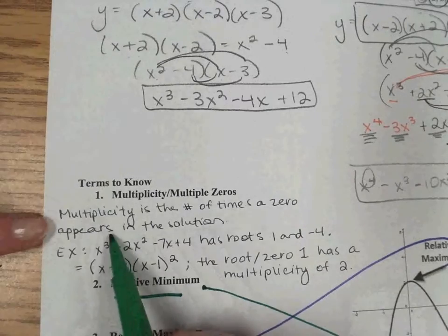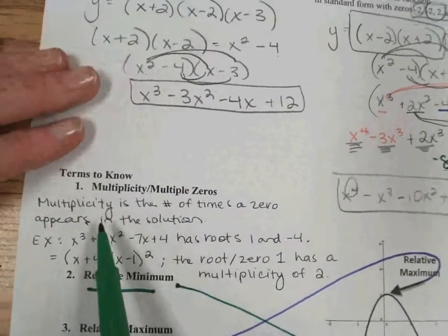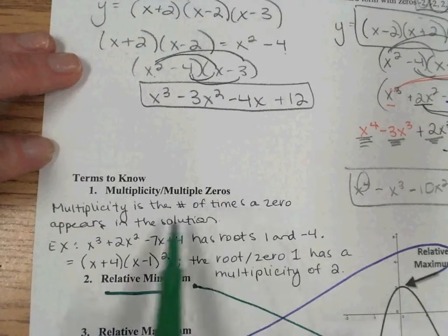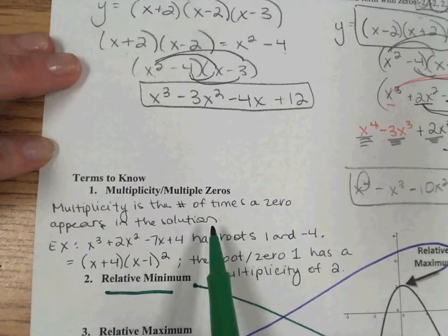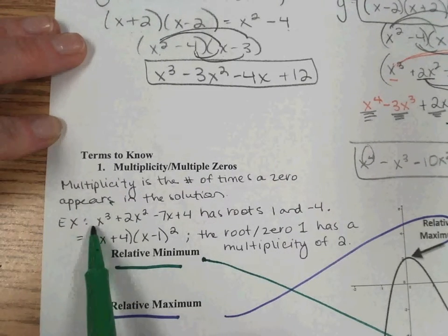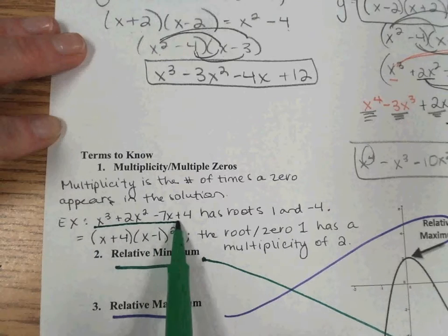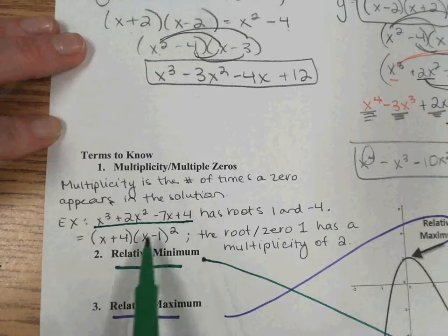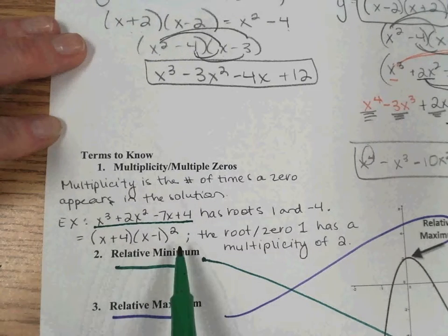The definition for multiplicity says that multiplicity is the number of times a zero appears in the solution. For example, we have x cubed plus 2x squared minus 7x plus 4, which would look like this in factored form.